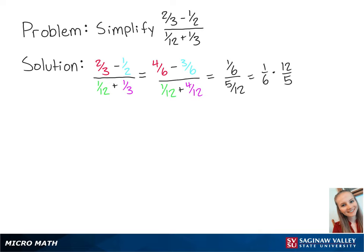To make this easier, we can rearrange the numbers. So 1 sixth times 12 fifths is equal to 1 fifth times 12 sixths.